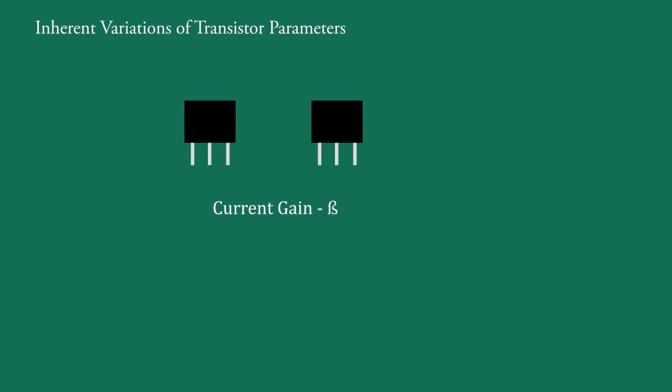Manufacturing technology is not advanced enough to solve this problem of variation in β. Here, we will discuss the transistor parameter β, because there is a very large effect of its variation on the operating point.